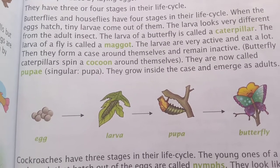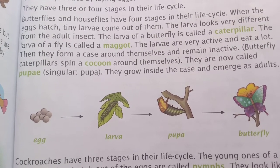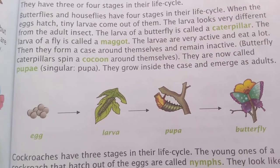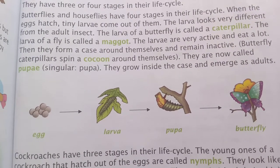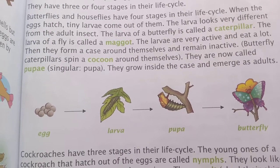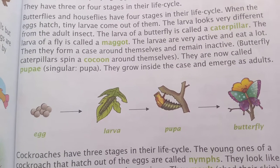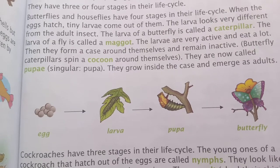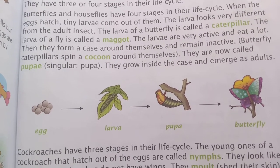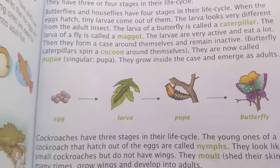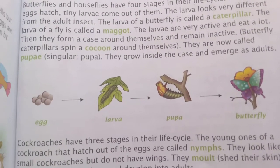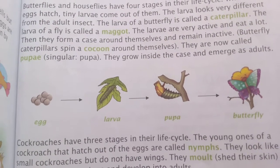The larvae are very active and eat a lot. Then they form a case around themselves and remain inactive. Butterfly caterpillars spin a cocoon around themselves and are now called pupae. They grow inside the cocoon and emerge as adults.